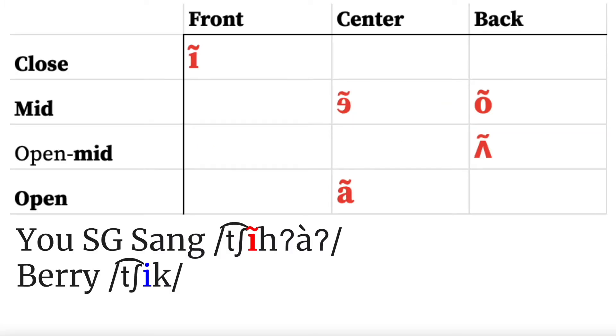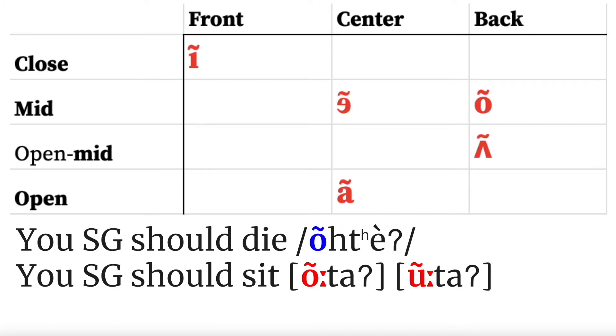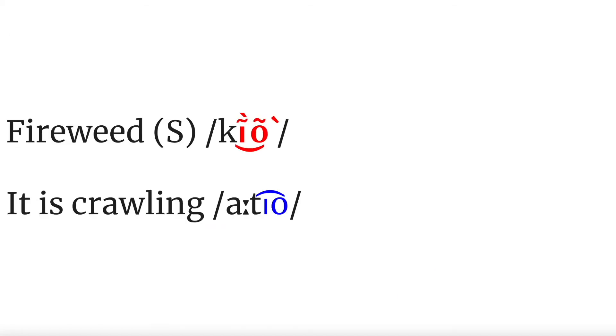Five monophthongs have nasal counterparts, except the close and close mid-nasal vowels, which have marginal contrast. Diphthongs may also be contrastively nasalized.